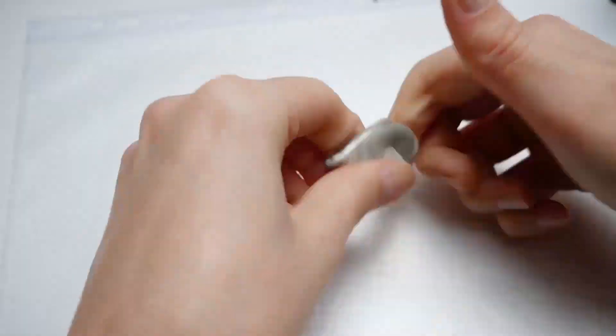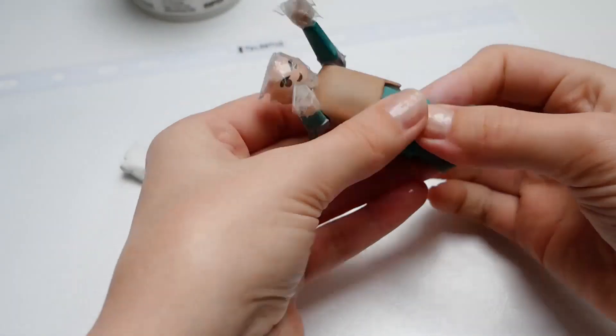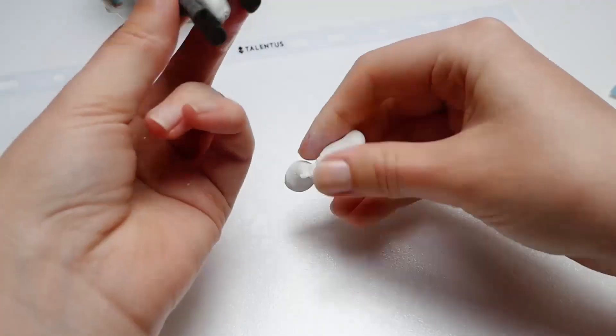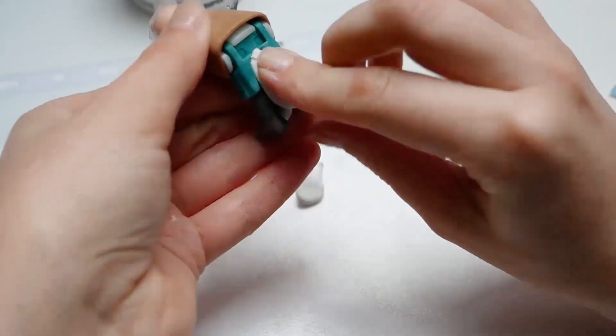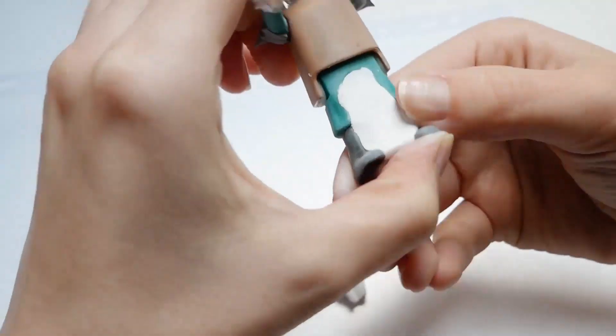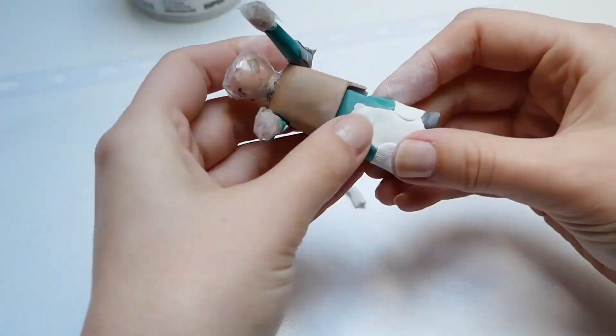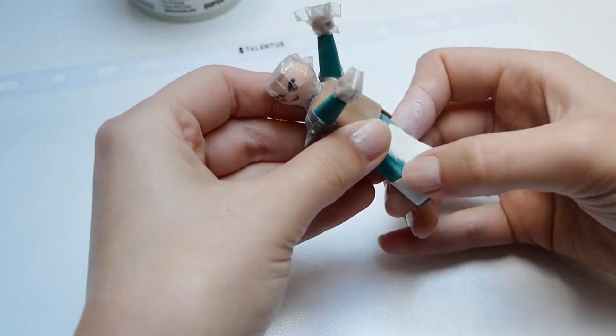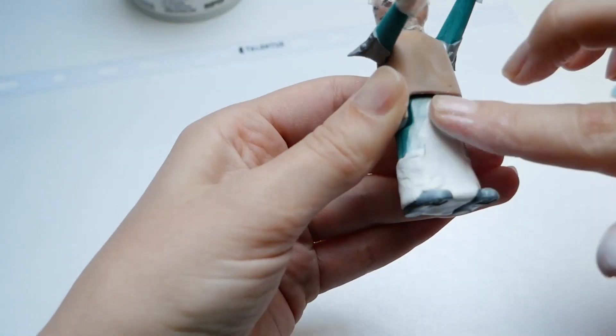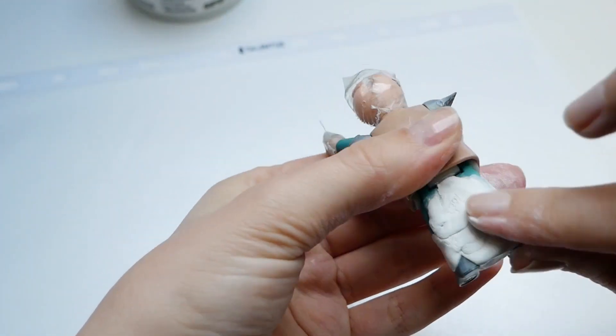Epoxy sculpt consists of two compounds that have to be mixed together in equal proportions. To be able to judge the amount, I advise making two balls first and compare the size before mixing the compounds together. I start with sculpting the robe, so first I am filling up the space between his legs, and then also adding some material to the sides of the legs. To smooth up the form, I use normal water. It also helps the material to not stick to your fingers, which is quite handy.